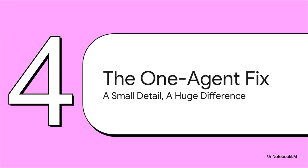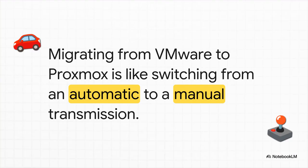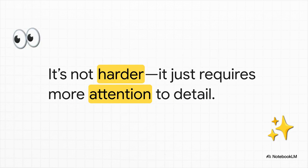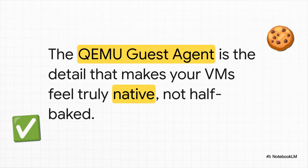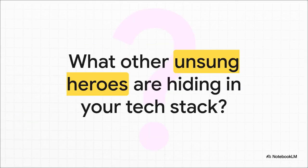Let's bring this all home. It all boils down to one simple, incredibly powerful fix. VMware is a lot like an automatic car — it holds your hand, it bundles everything together for you, it makes things easy. Proxmox is more like a manual transmission — it gives you way more control, more power, more flexibility, but it expects you to know when to shift the gears. It's not harder to drive; it just requires you to be a bit more deliberate and pay attention to the details. And the QEMU guest agent is the most important detail of them all. Forgetting it leaves you with a VM that feels clunky and disconnected. But installing it is what makes everything click into place — it's the final touch that makes your migrated VM feel truly at home in Proxmox. Ultimately, this is a perfect example of how one tiny, often overlooked component can be the difference between total frustration and absolute perfection.